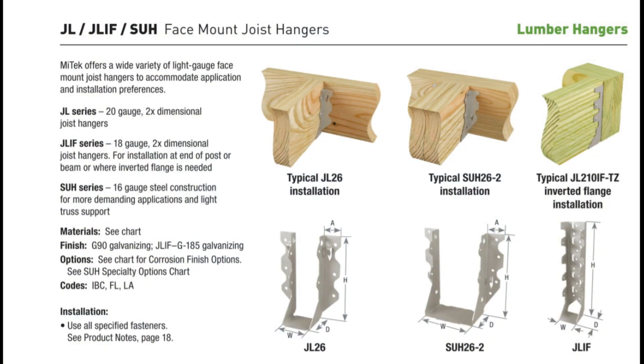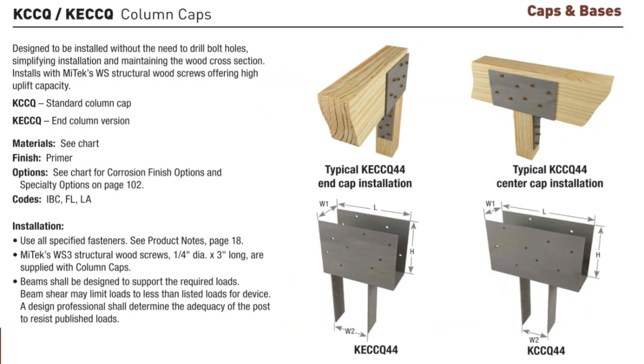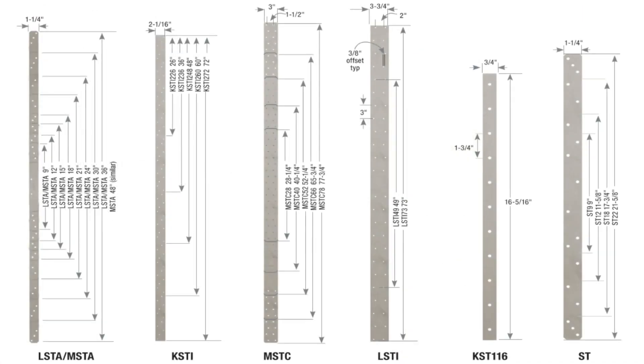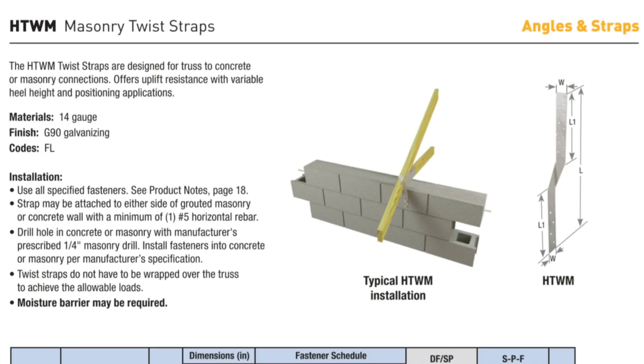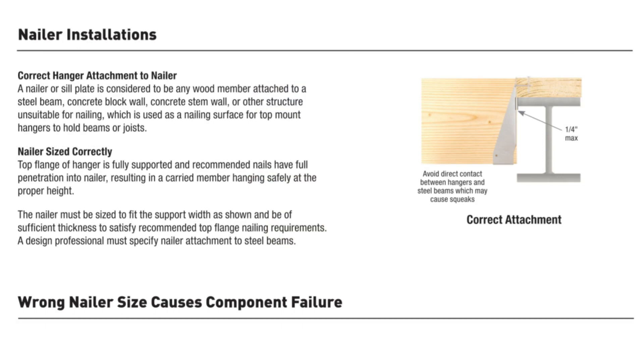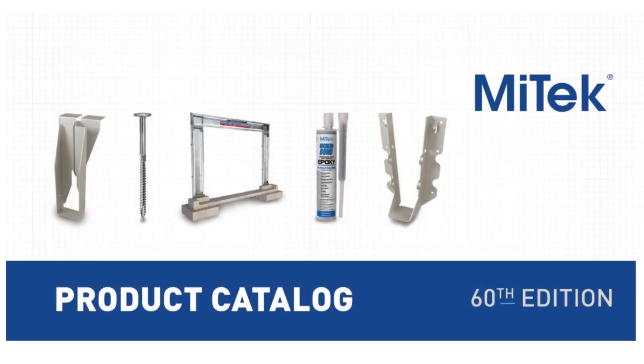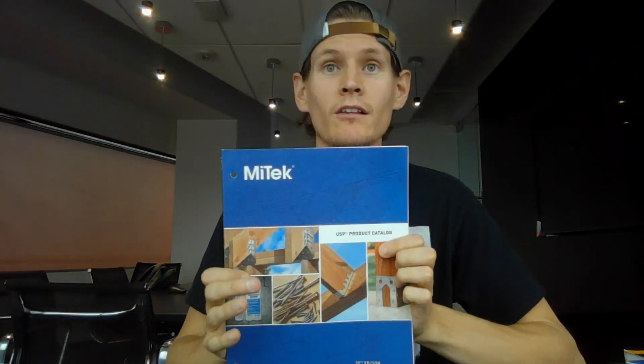Our first design material is MiTek. Within this catalog, it has everything you would need to design connections for wood construction — hangers, caps, base plates, straps, bracket connections, attachments to CMU, attachments to other wood elements, attachments to steel, to concrete. Anything you could think of, they've thought of it, and it's all broken down in this catalog. You can go to the MiTek website — link in the description — and order this catalog and they will mail it to you for free. It also gives you capacities of all the different connector elements, your design strength, everything you need for your calculations.